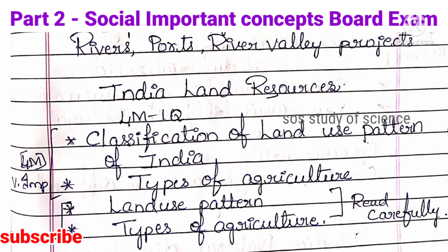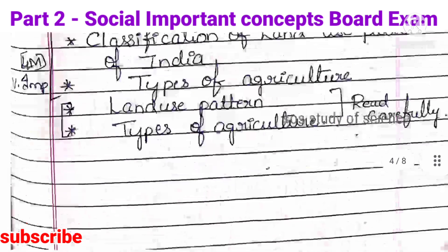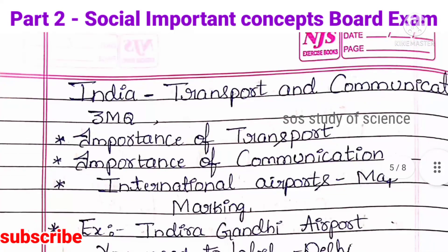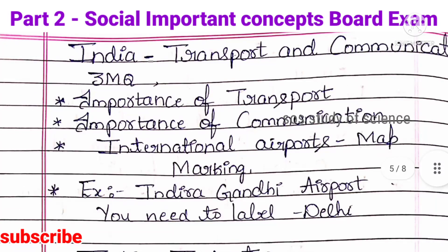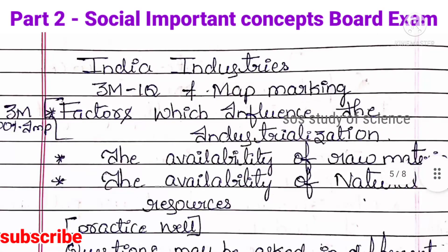Moving to the next lesson — India Transport and Communication. One 3-mark question will be asked from this lesson. The important concepts are: Importance of transport, Importance of communication, and International airports. Based on international airports, map marking will also be asked — for example, they can ask where Indira Gandhi Airport is located, and you have to mark Delhi on the map. This is all about transport and communication.